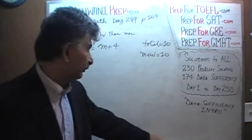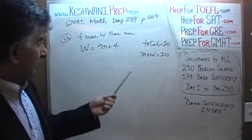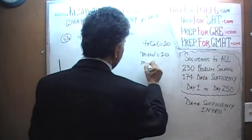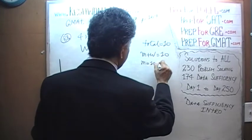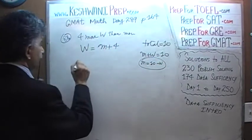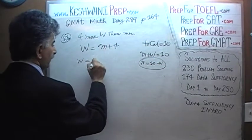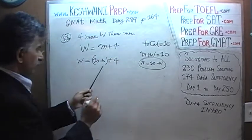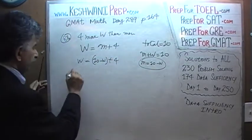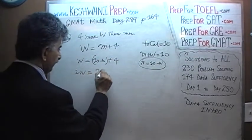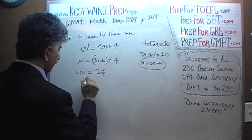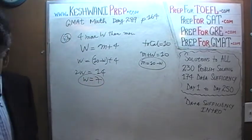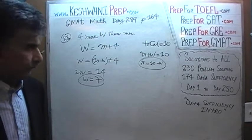We have two simple linear equations. Let's solve for M: M equals 10 minus W. Substituting: W equals 10 minus W plus 4. Bringing the W over gives us 2W equals 14, and W equals 7. Very simple, very straightforward problem.